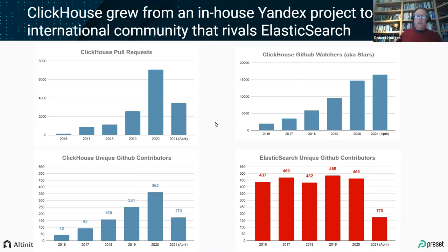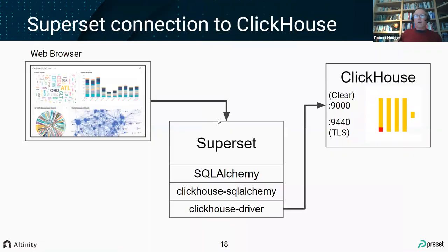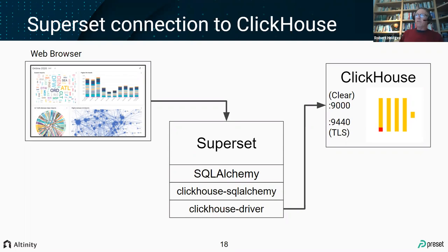Now let's talk about how we actually connect ClickHouse with Superset. ClickHouse has made a commitment to SQLAlchemy, so you'll need to install a SQLAlchemy driver. The architecture is: the ClickHouse SQLAlchemy driver (written in Python) uses the ClickHouse driver underneath, which handles network connectivity and speaks the wire protocol to ClickHouse. ClickHouse uses two ports for this TCP native protocol: port 9000 for unencrypted communications and port 9440 for TLS-encrypted communications.